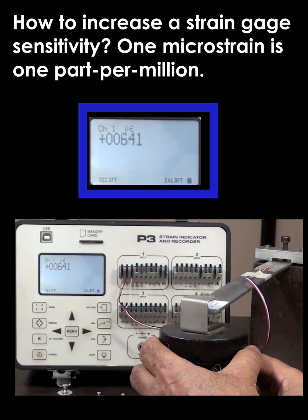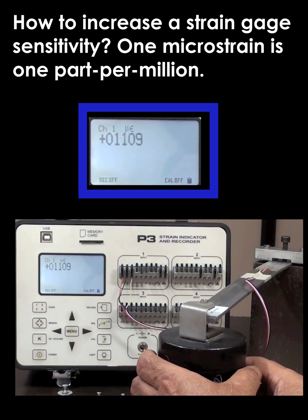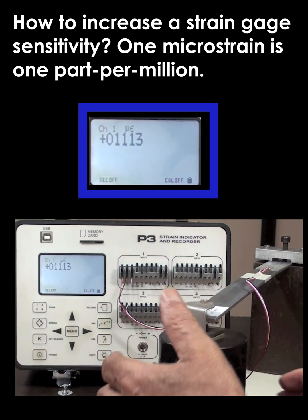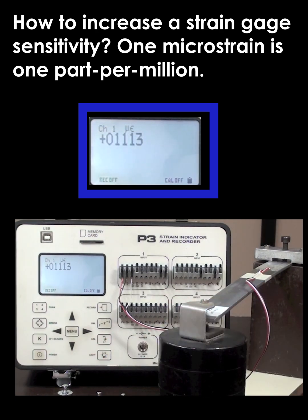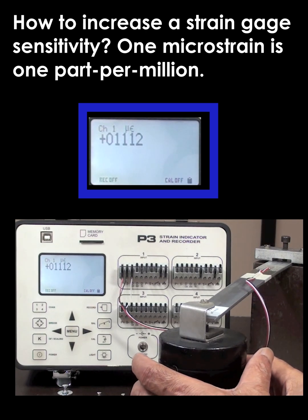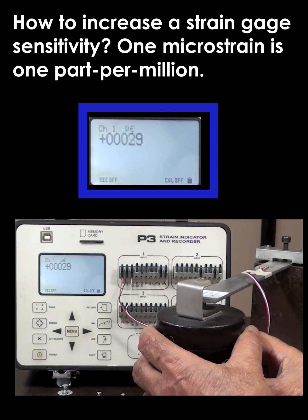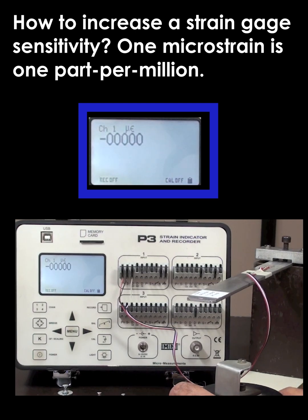Now you can see we're at a good zero condition. We take our two kilogram weight, put it on the end of it, and we're expecting 1113 microstrain. Once we let go of the weight, we get exactly that. This shows an example of the capability of an electrical resistant strain gauge.